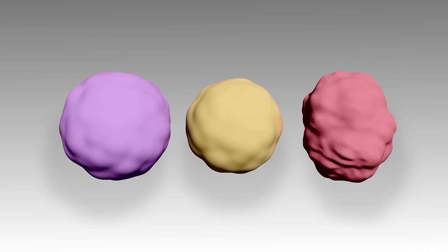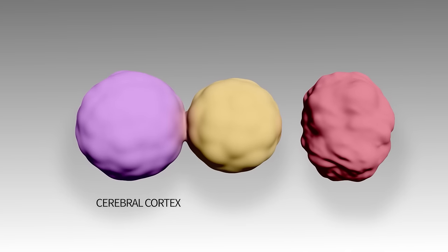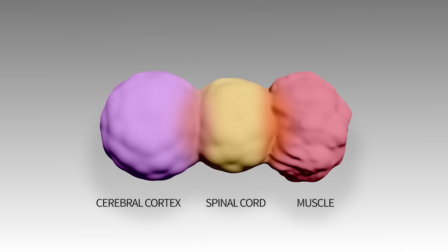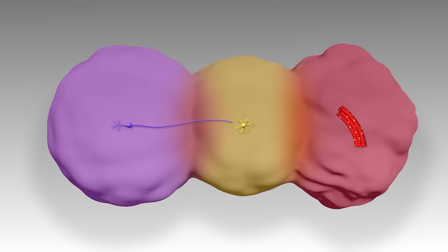One such combination was creating three distinct organoids: one from the cerebral cortex, one resembling the spinal cord, and another resembling muscle. We then put them together and saw the same fusing we saw in the two-part organoid combination.